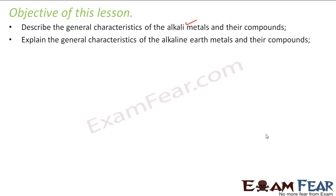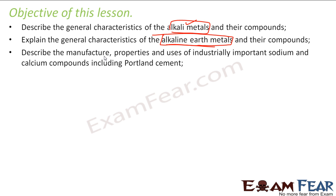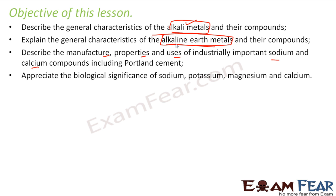We will also explain the characteristics of alkaline earth metals. Please note what are different — alkali metals and alkaline earth metals — we will discuss this. We will also describe the process to manufacture, properties and uses of sodium, calcium, and in fact most of the alkali and alkaline earth metals. We will also appreciate the biological significance of sodium, potassium, magnesium, and calcium. So if you see, these two are alkali metals and these two are alkaline earth metals.